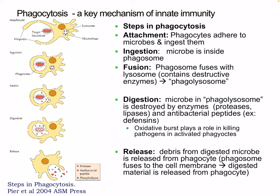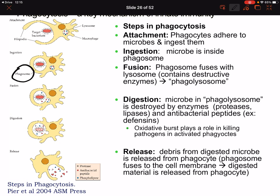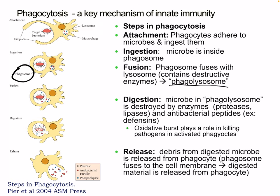The steps in phagocytosis begin with attachment — the target bacterium meets the macrophage and the phagocyte adheres to and ingests the microbe. Then we have ingestion, where the microbe is inside the phagosome. Next, the phagosome fuses with the lysosome, which contains destructive enzymes, creating the phagolysosome. Then we have digestion, where the microbe is destroyed by enzymes including proteases and lipases, and antimicrobial peptides like defensins. We also have the oxidative burst, which involves reactive oxygen species like nitric oxide and hydrogen peroxide — also known as the respiratory burst.